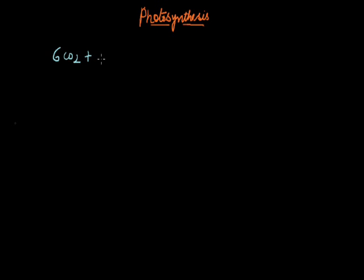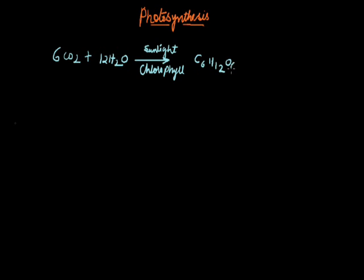The equation for photosynthesis is: CO2, that is carbon dioxide, combines with water molecules in the presence of sunlight and chlorophyll, releasing the products as glucose, that is C6H12O6, plus oxygen is released, and water is also released as a byproduct of this reaction.